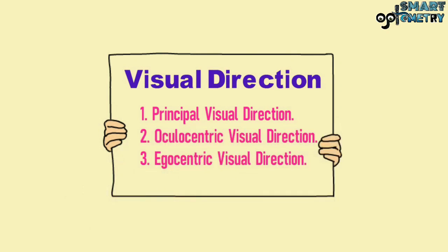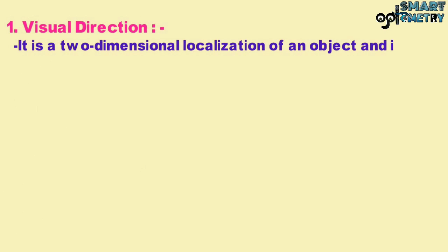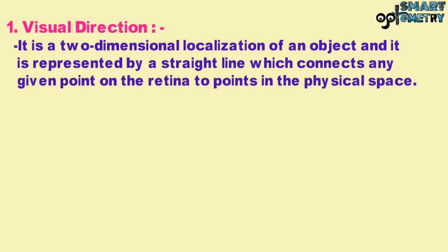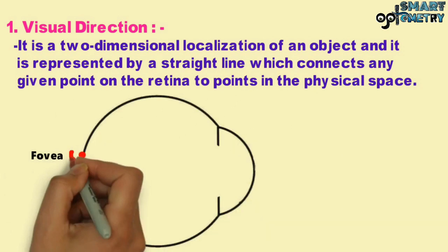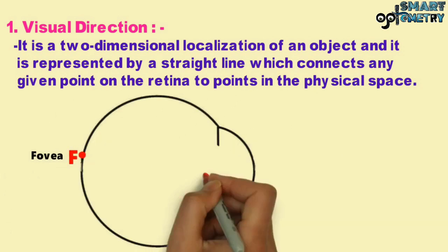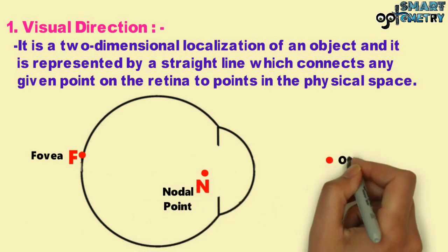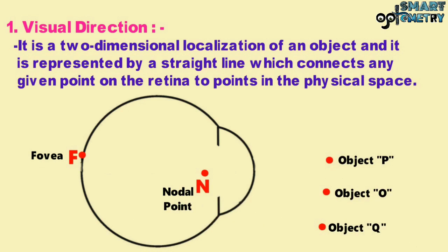Visual Direction is a two-dimensional localization of an object, represented by a straight line which connects any given point on the retina to points in the physical space. In the diagram, you can see the fovea represented by the point F, the nodal point represented by the point N, the object P, the object O, and the object Q.